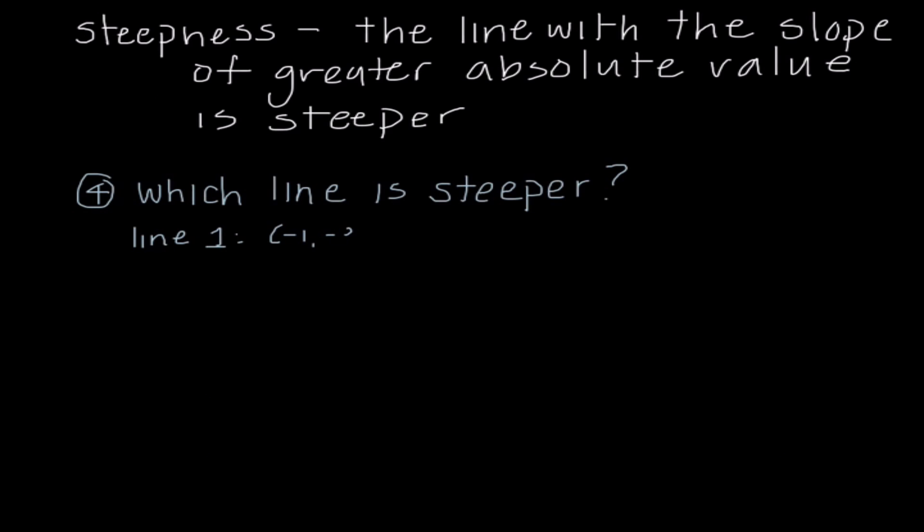The next characteristic we're going to learn about slope is something called steepness. The line with the slope of greater absolute value is steeper. And these problems are going to be important because a lot of the problems out of your book tonight are not just going to be simple like, here are these two ordered pairs, what's the slope? You're going to have to do a little bit more work on them.